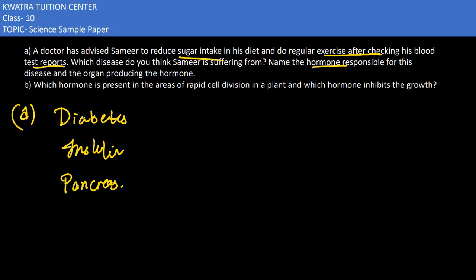It is produced with the help of the organ pancreas. Which hormone is present in the areas of rapid cell division in a plant, and which hormone inhibits the growth? So rapid cell division is what?